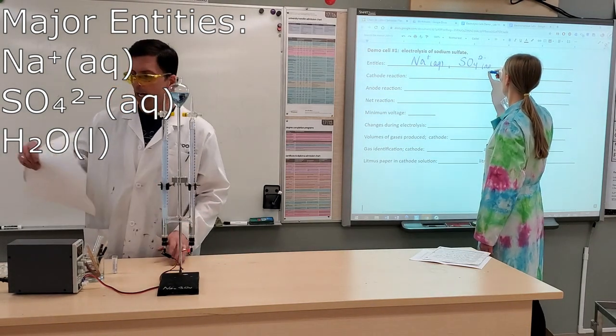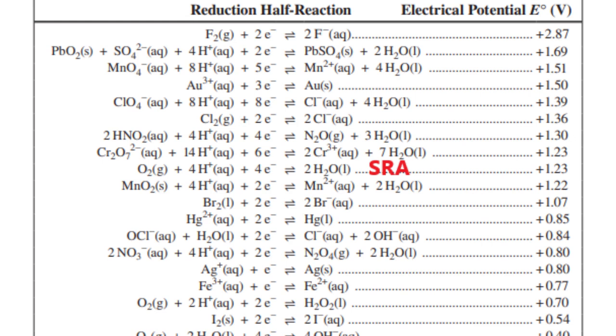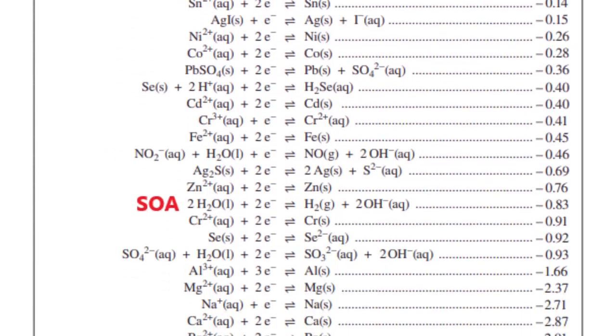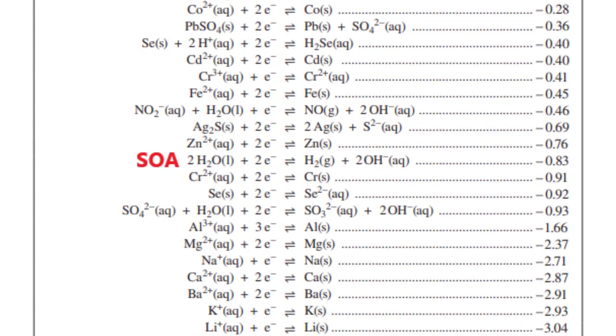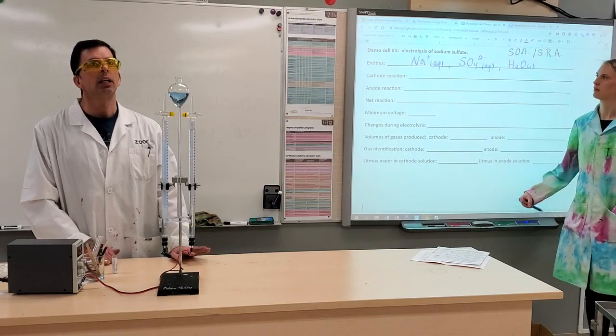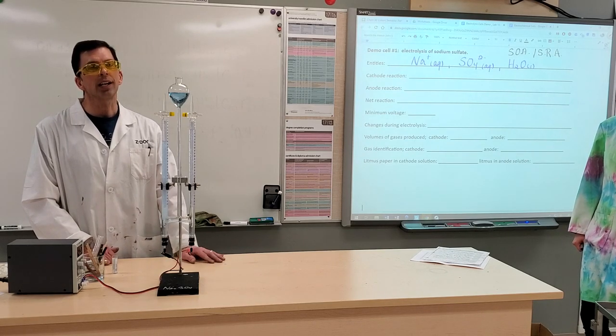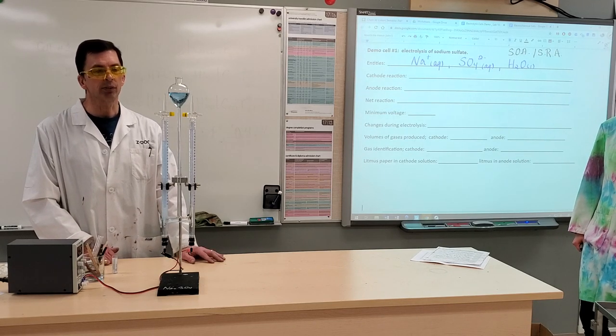Consulting our data book. We would find that water would be both the strong reducing agent and strong oxidizing agent. So that's really a unique situation that comes up in electrolysis. Sometimes the same entity, for example, water is both the strong oxidizing agent and the strong reducing agent.